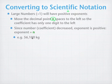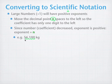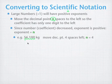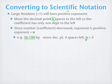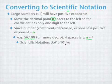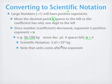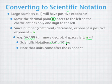For example, if we take 56,100 kilograms, the implied decimal point is after the last zero. We move to the left 1, 2, 3, 4 decimal places, so there's just one non-zero digit to the left of the decimal point. We moved four spaces to the left, so n equals 4 and the coefficient is 5.61, giving us 5.61 times 10 to the fourth kilograms. Notice that units come after the entire number, including the exponent.